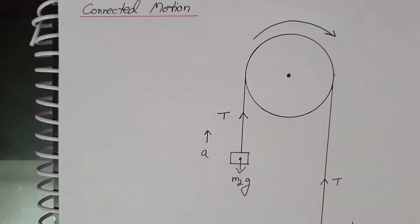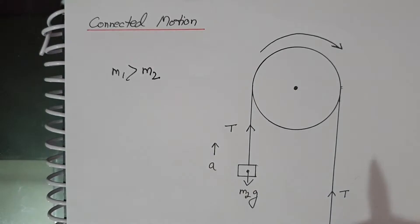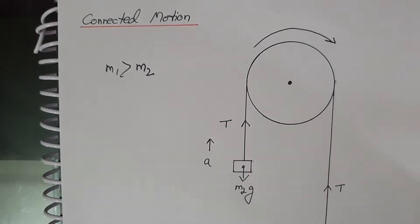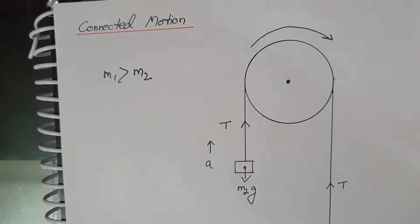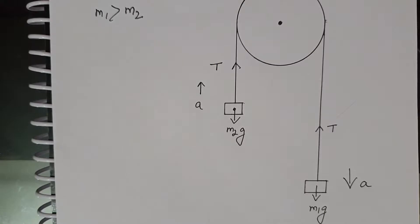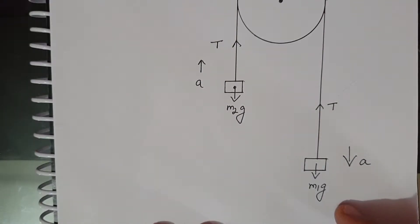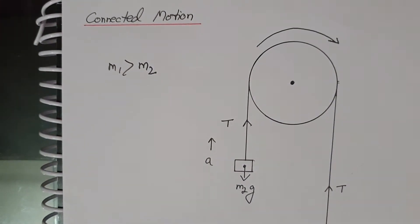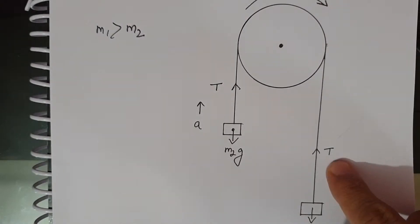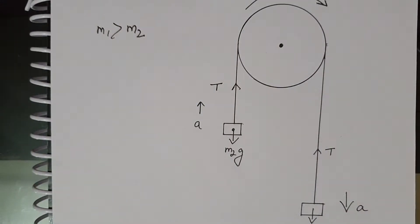We consider that M1 is greater than M2. Since M1 is heavier, it will move downward and M2 will move upward. Let A be the common acceleration of the system. Since the pulley is light and frictionless, the tension T in the string is the same on both sides — T acts upward on both bodies.